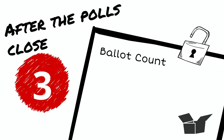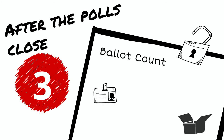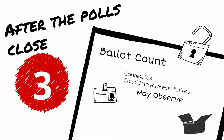After the polls close, election officials will begin to count ballots. Candidates and candidate representatives like scrutineers or the official agent may observe the ballot counting process. The Chief Election Officer, or CEO, will provide candidates with information about observing the ballot count.